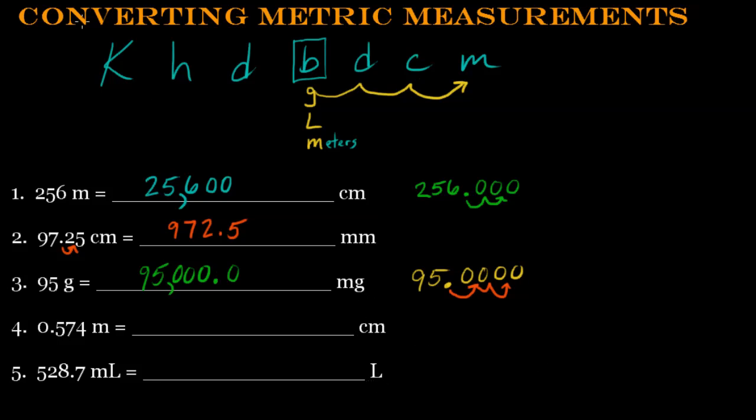Next one. Take a look at that. Next one we have 0.574 meters is how many centimeters. So I'm starting, my starting point for this case now is meters, is meters. And what am I doing this time? I'm going from meters over to centimeters. So I need to move that decimal place over a few. One, two. Two places to the right. From meters to centimeters.